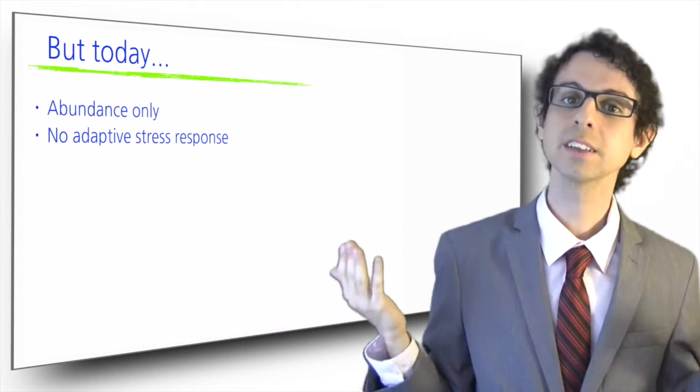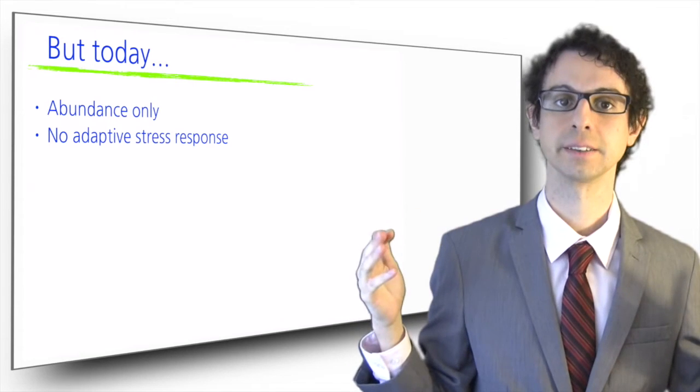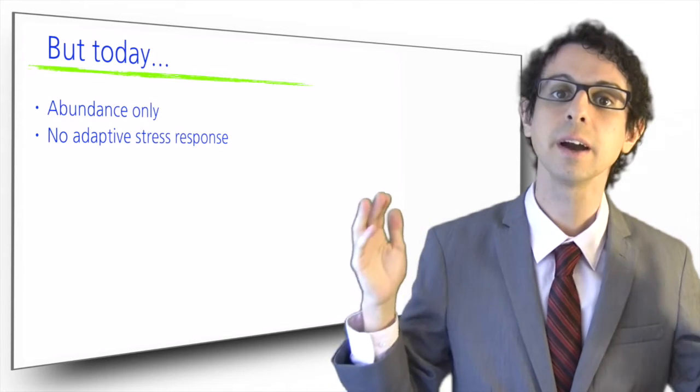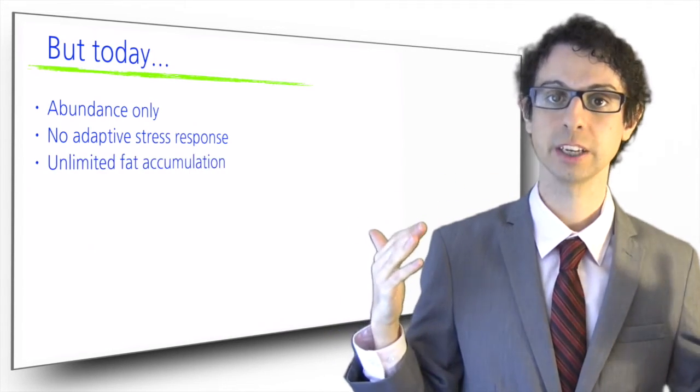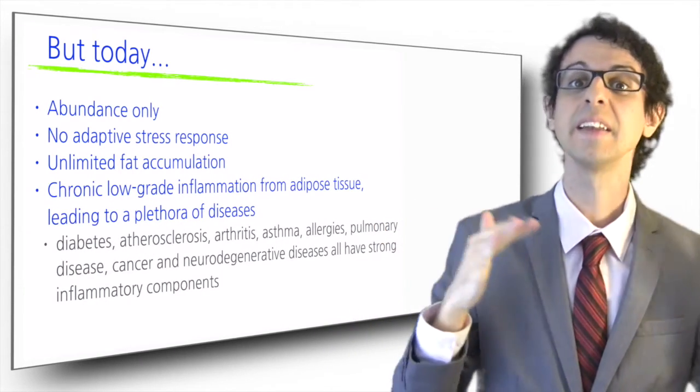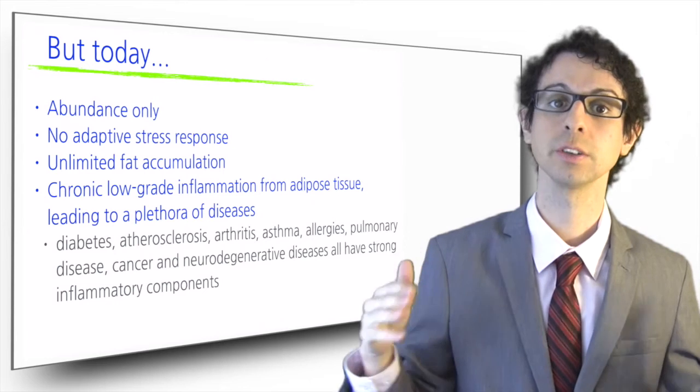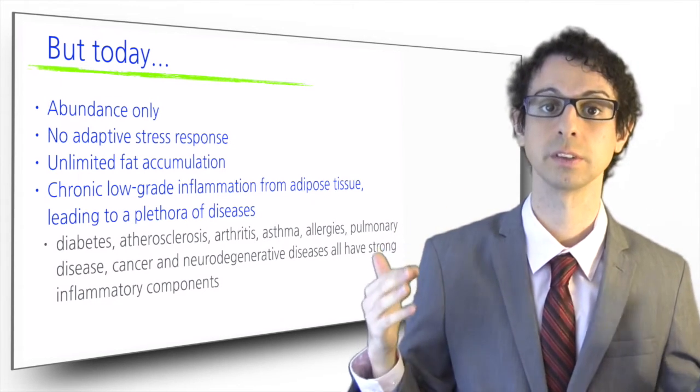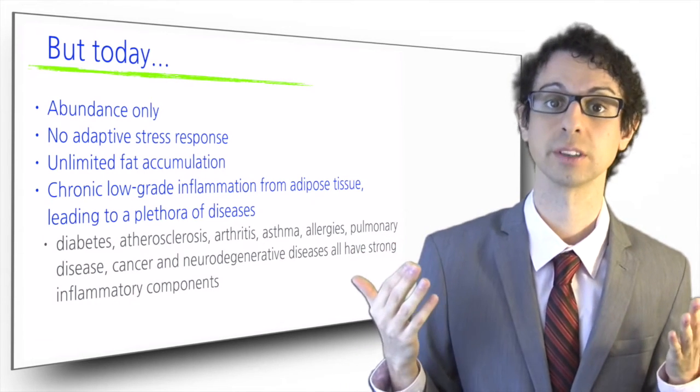Today, we don't experience food scarcity and calorie restriction, and we live in a constant state of food abundance. The adaptive stress response is no longer triggered, and it is very easy to eat in excess of our needs, leading to unlimited fat accumulation and a chronic release of inflammatory mediators from the adipose tissue that instead of boosting immunity, cause a slow, steady destruction of our body's tissues, leading to a plethora of inflammatory diseases such as diabetes, atherosclerosis, arthritis, asthma, allergies, pulmonary disease, cancer, and neurodegenerative diseases.